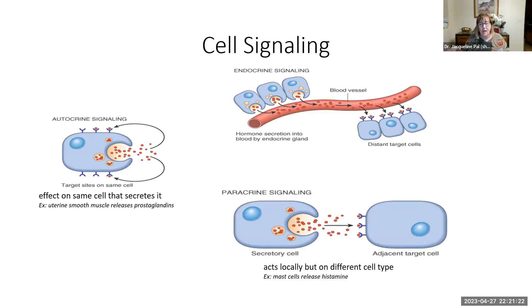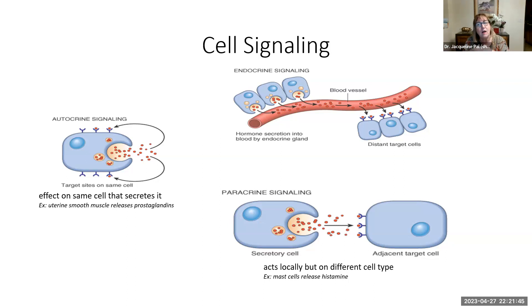The third type is paracrine signaling — endocrine acts over long distances, autocrine acts on self, and paracrine acts on nearby cells. We'll see many examples in the intestinal tract. Another example is at a site of injury: certain cells release histamine, which triggers an inflammatory response. Antihistamines block this histamine release and prevent the inflammatory reaction. That concludes this section — thank you for your hard work and I'll see you in the next video.